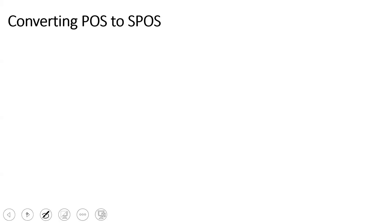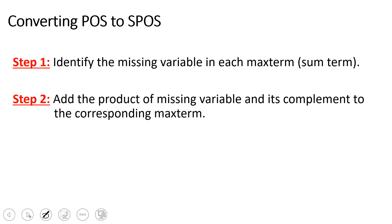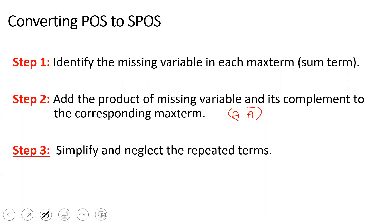You should follow three steps. First step: identify the missing variable in each max term — that is, the sum term. If you have a minimal product of sum expression, identify which variable is missing. Step 2: add the product of the missing variable and its complement to the corresponding max term. For example, if the missing variable is A, add A into A-bar. If the missing variable is B, add B into B-bar. The last step is to simplify and neglect the repeated terms.